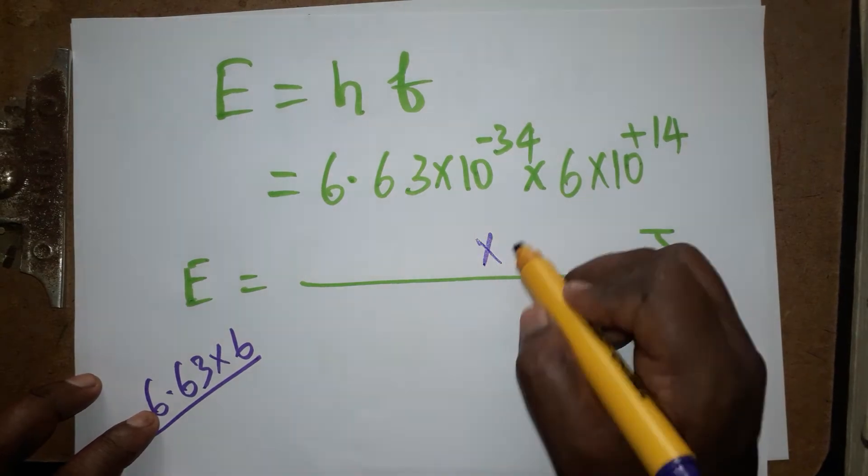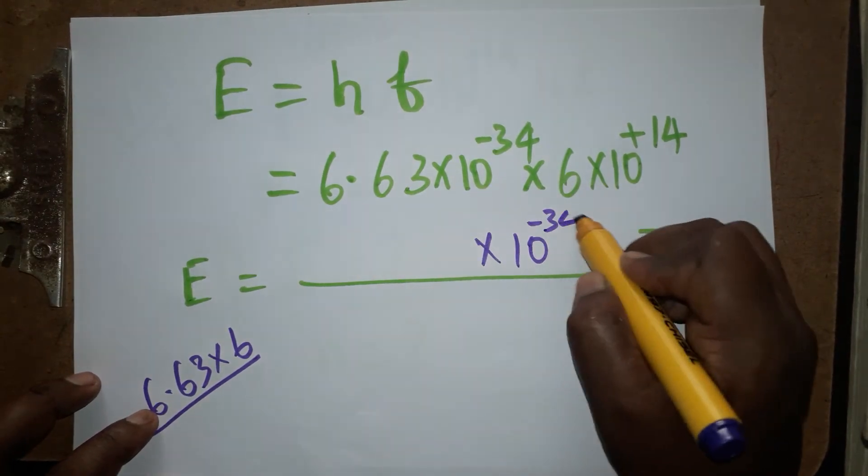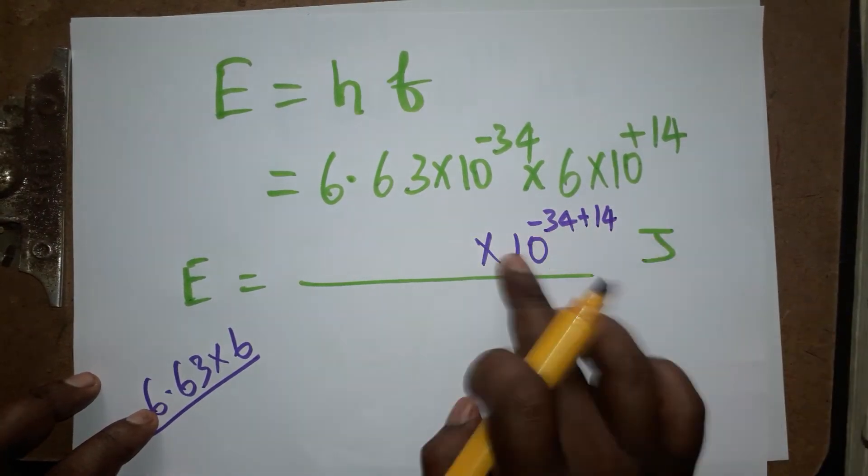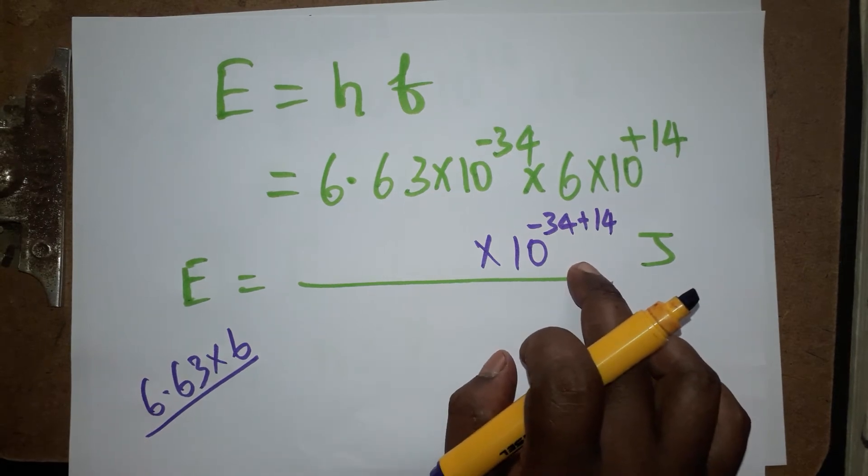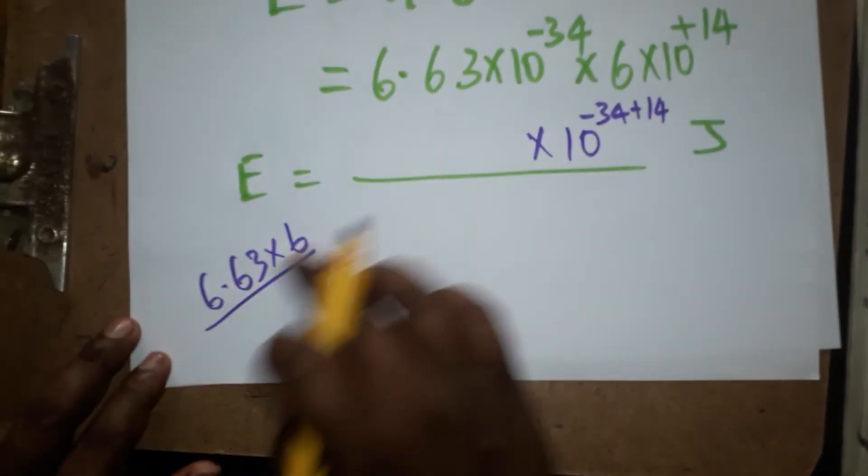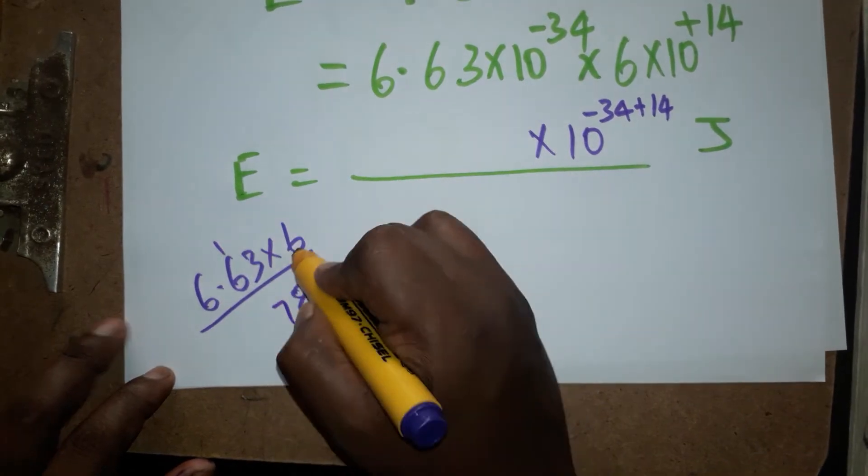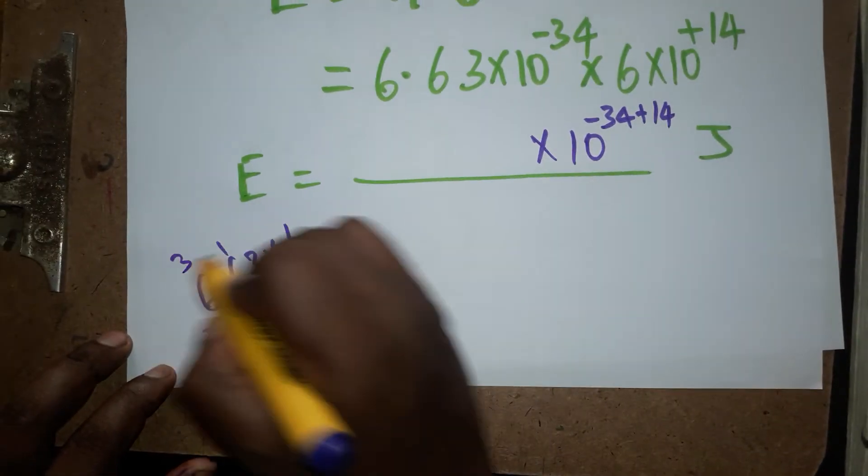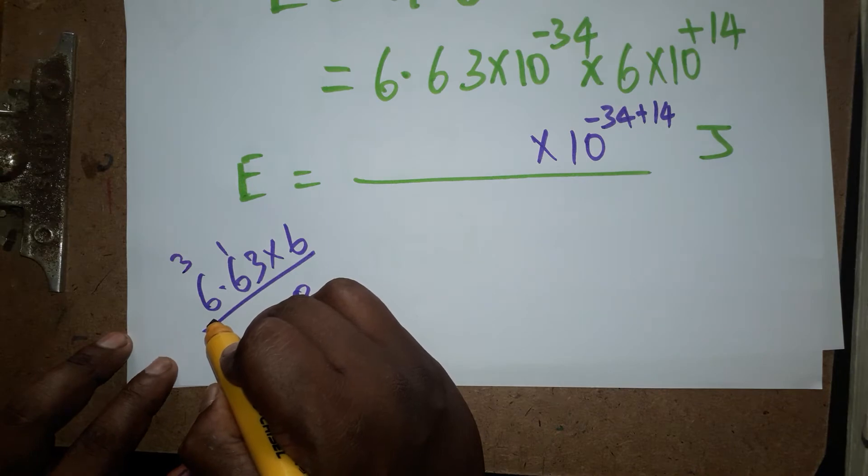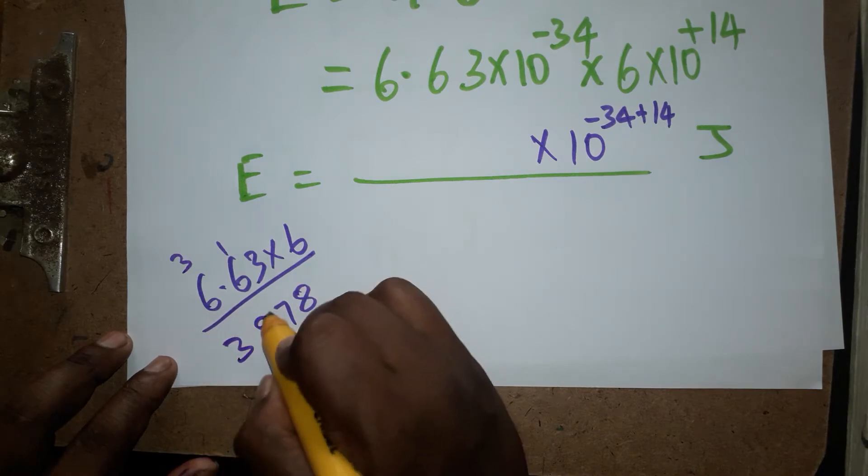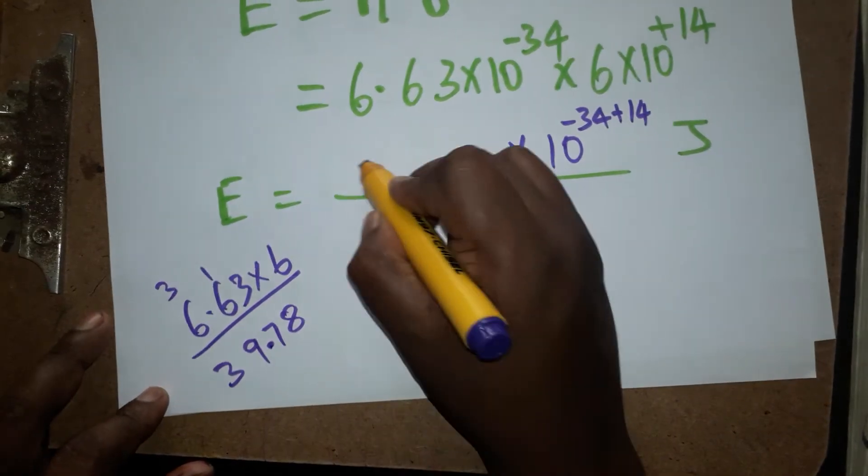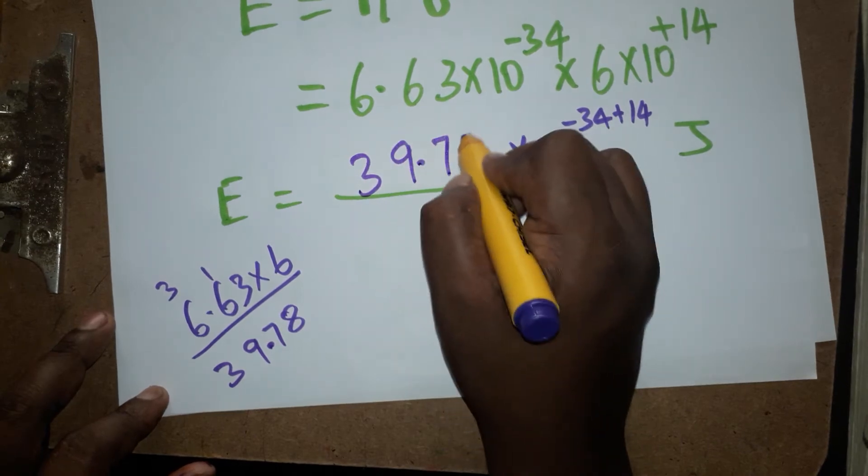We should do with the power: 10 power minus 34 plus 14, this will get answer as 10 power minus 20. This multiplication: 18, 36, 36 plus 3 equals 39. Two decimals, 39.78.